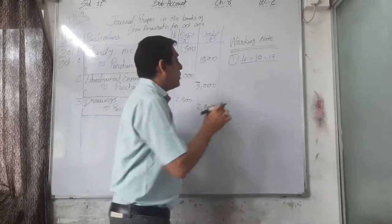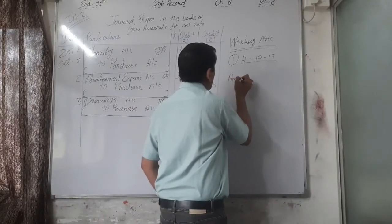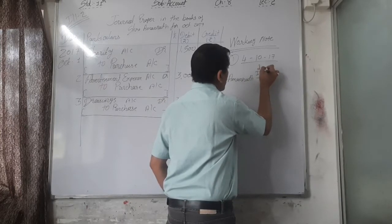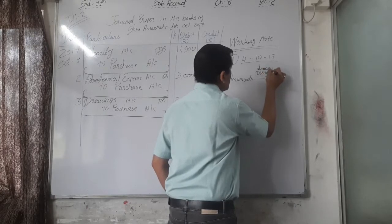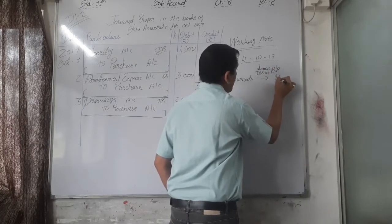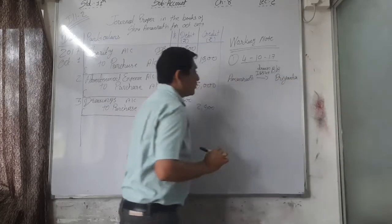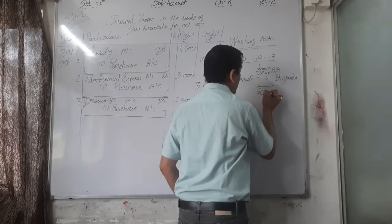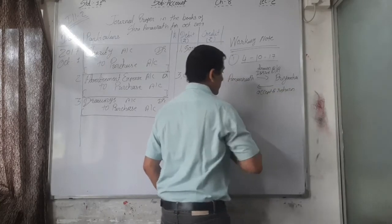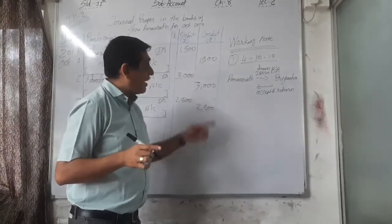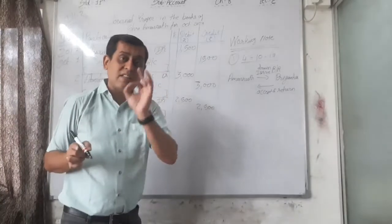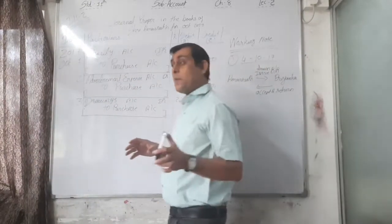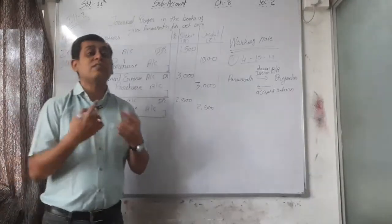Bill of rupees 4,000 accepted by Priyanka means Amarna issued a bills receivable on Priyanka. Priyanka accepted and returned it. At maturity — which is October 4th — Amarna went to Priyanka with the bills receivable, but she refused to pay because she had no money. At that time the bill is dishonored.